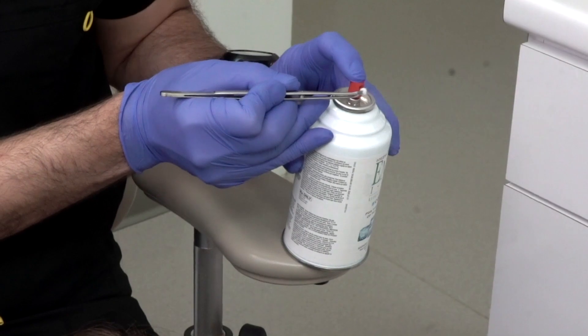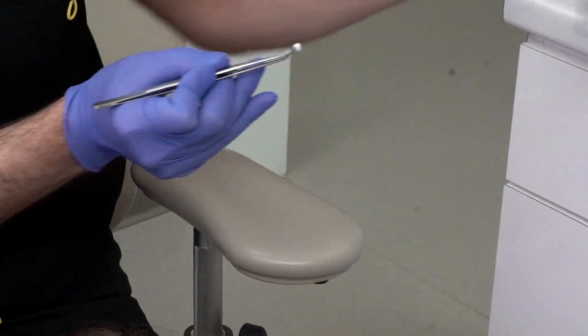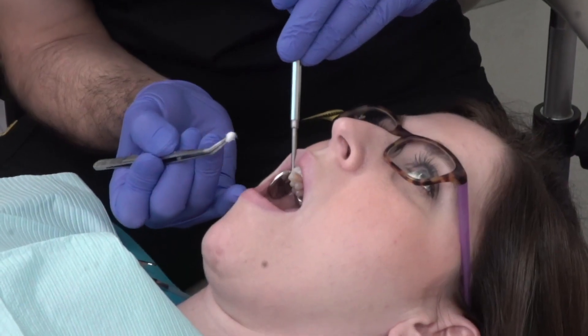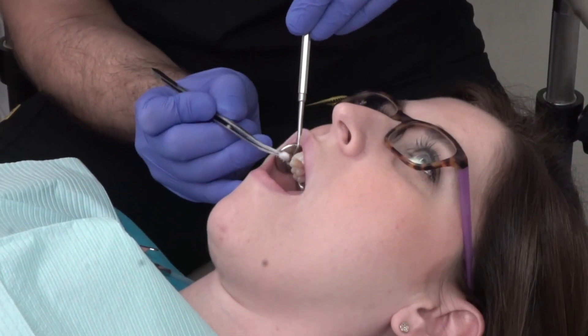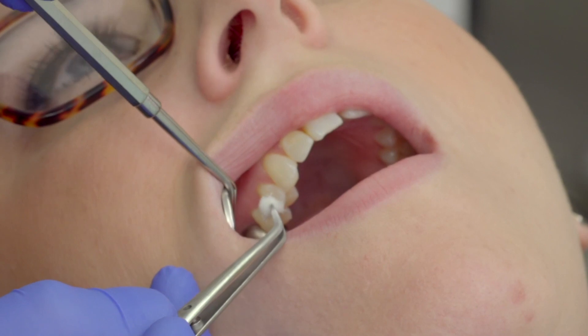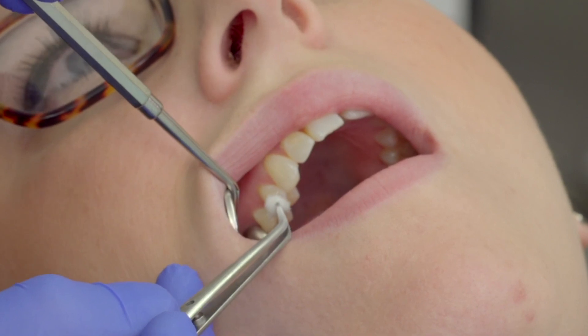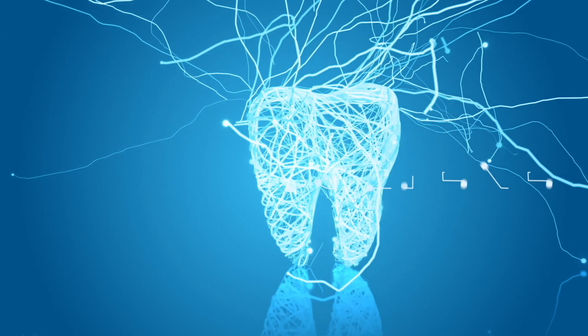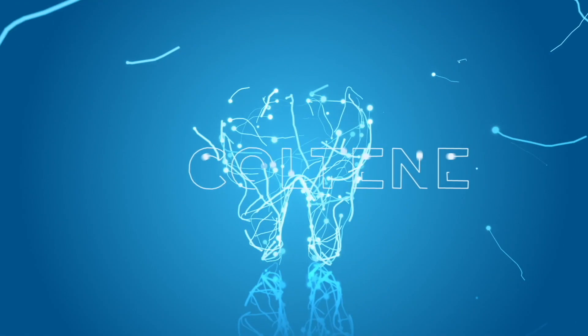In essence, they were working on a tooth that was already dead. Pulp testing the tooth prior to the fabrication of the crown would have prevented all of that, and they would have committed the tooth to a root canal procedure prior to moving on to the crown.